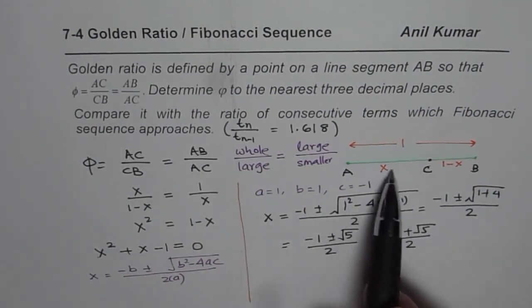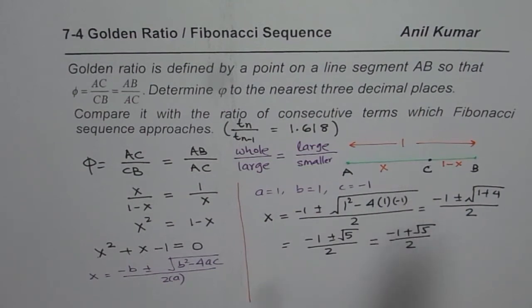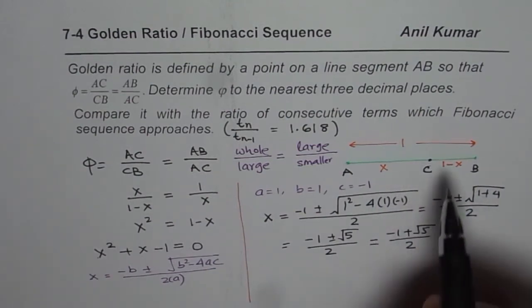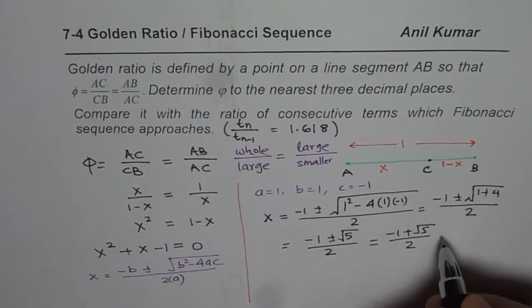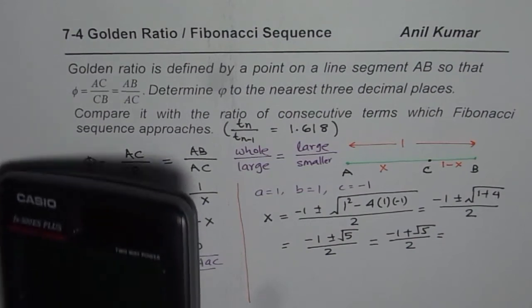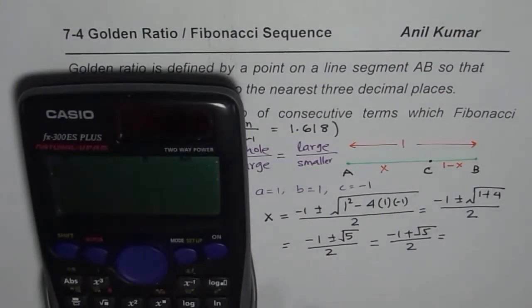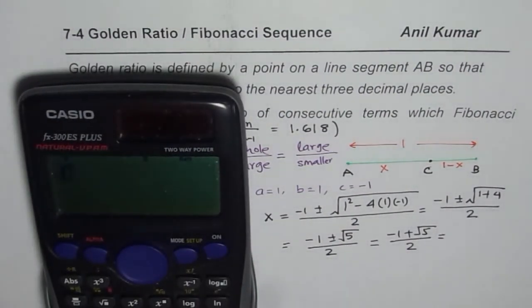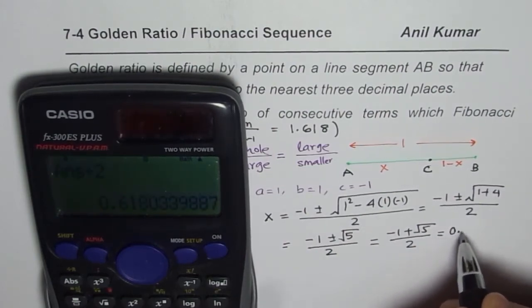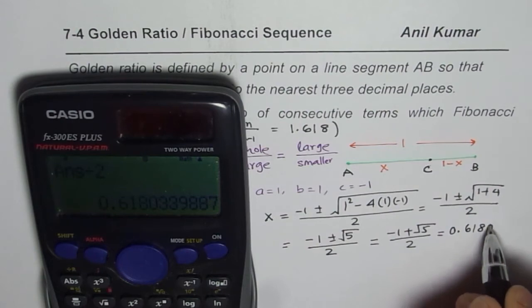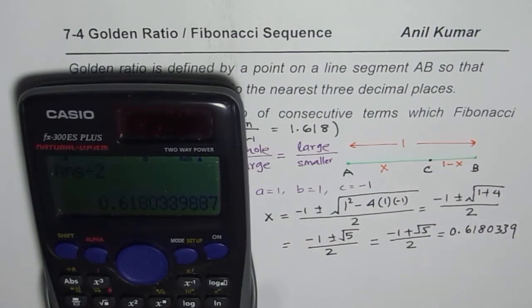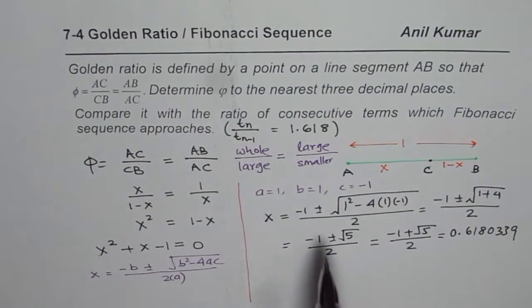Now, how much is this value? This is the value of X, AC. Now, the X value here is equal to, let us use calculator and find it out. So, we have square root of 5 minus 1, square root of 5, let us say equals to, minus 1 equals to, divided by 2 equals to, in decimals, this is equal to 0.6180339. That is the value of X.